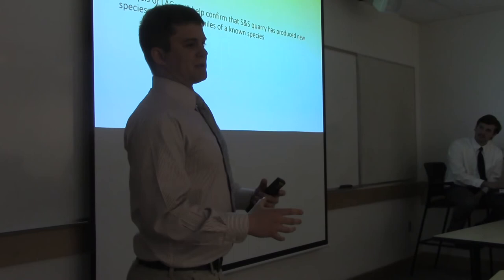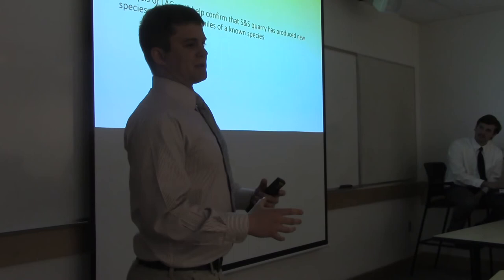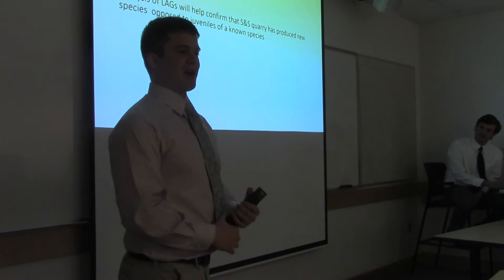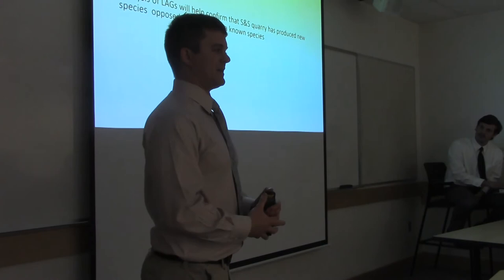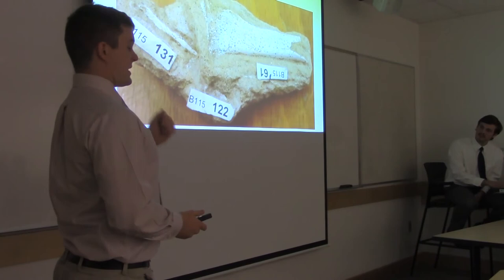With these growth lines, we will be able to confirm that we actually do have the eight new species that we think we do, rather than a juvenile of an existing species. The ones that we have are a little smaller than most of the other sphenosuchians or drapanosaurs that have been found in other parts of the world.